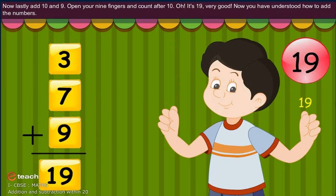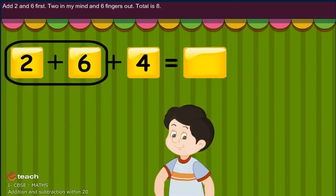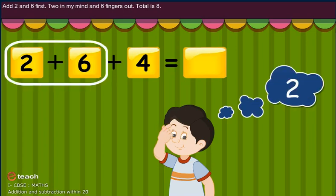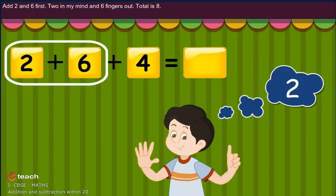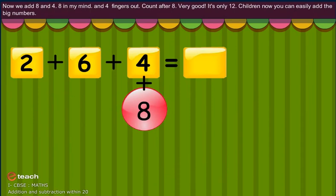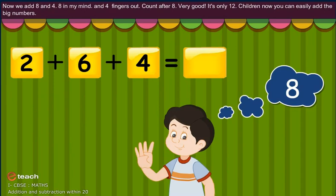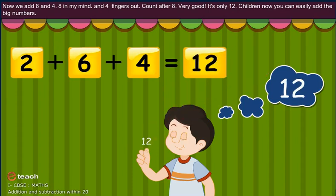Now you all understand how to add by numbers. Add 2 and 6 first. 2 in my mind and 6 fingers out. Total is 8. Now we add 8 and 4. 8 in my mind and 4 fingers out. Very good! It's 12.